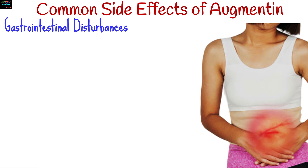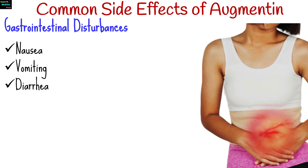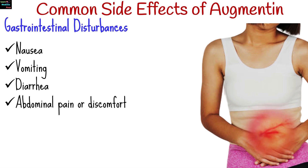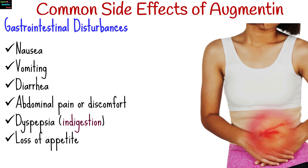Gastrointestinal disturbances are the most common side effects of Augmentin. It may cause nausea, vomiting, diarrhea, abdominal pain or discomfort, dyspepsia or indigestion, and loss of appetite.